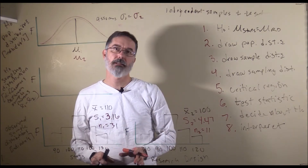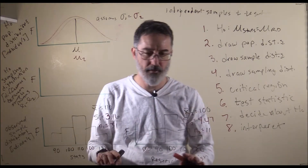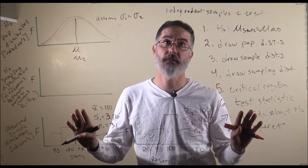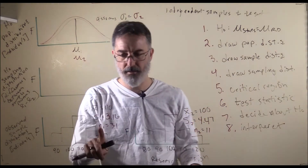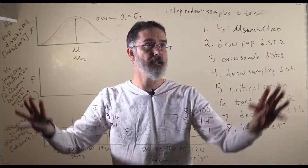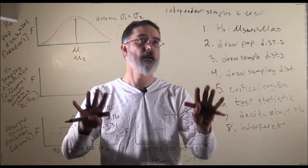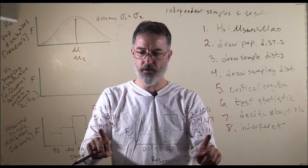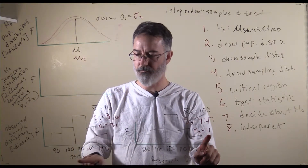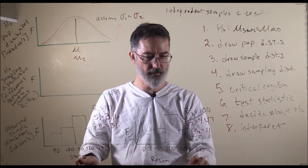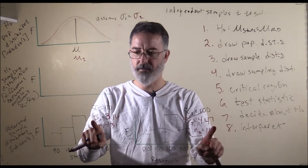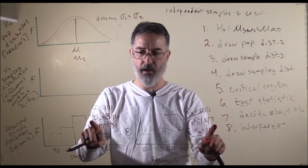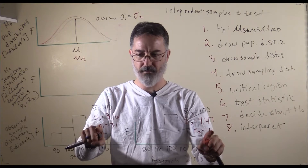So far I explained how to do the independent samples t-test when the sample sizes are the same, but I briefly want to go over some of the implications when they are not the same. Everything is exactly the same in this example as it was before, except the sample sizes are no longer 100. Now there are 31 stats students and 11 research design students, and they also no longer have the same standard deviation as each other, so we can see what happens because of the different sample sizes.